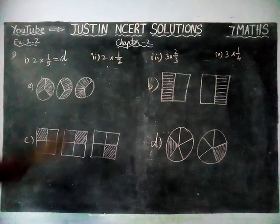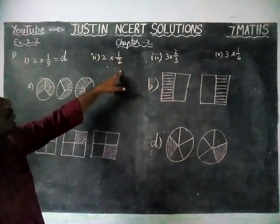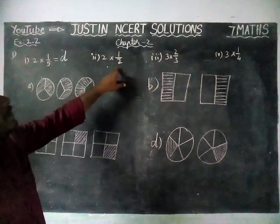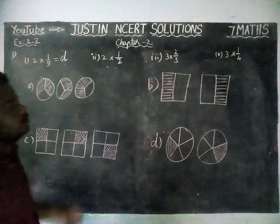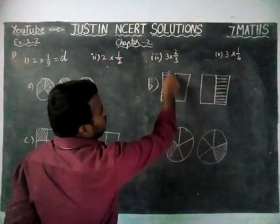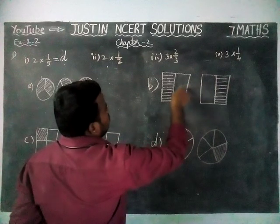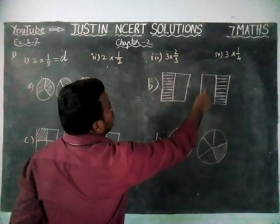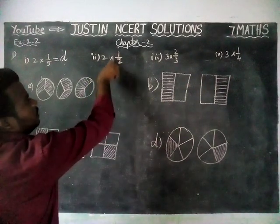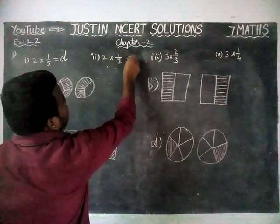Next, second question: 2 into 1 by 2. We need the total divided part equal to 2, and here it is divided into 2 parts — this is 1, this is 2. And here 1, 2. So totally 1 by 2, 1 by 2. We have 2 diagrams, so 2 into 1 by 2. Option B is the correct answer.